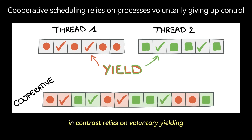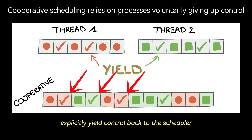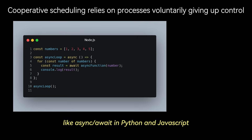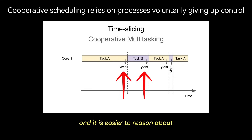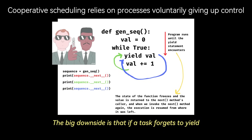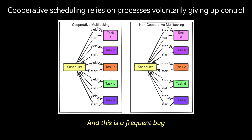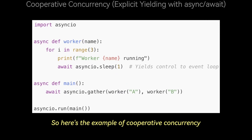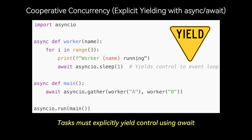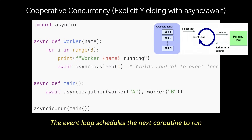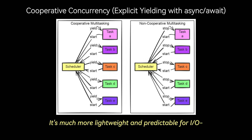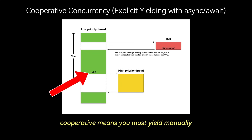Cooperative scheduling, in contrast, relies on voluntary yielding. Tasks must explicitly yield control back to the scheduler. This model is used in many user-space concurrency frameworks, like async/await in Python and JavaScript, or goroutines in Go. It has lower overhead because switches occur only at known points, and it is easier to reason about since task switches are deterministic. The big downside is that if a task forgets to yield, it can block the entire system — a frequent bug among newcomers to asynchronous programming. In the async/await example, tasks must explicitly yield control using await. The line 'await asyncio.sleep(1)' yields control back to the event loop, which schedules the next coroutine. Unlike threads, this uses no kernel threads — it's all user-space logic, much more lightweight and predictable for I/O-heavy workloads. Cooperative means you must yield manually, using keywords like await or yield.